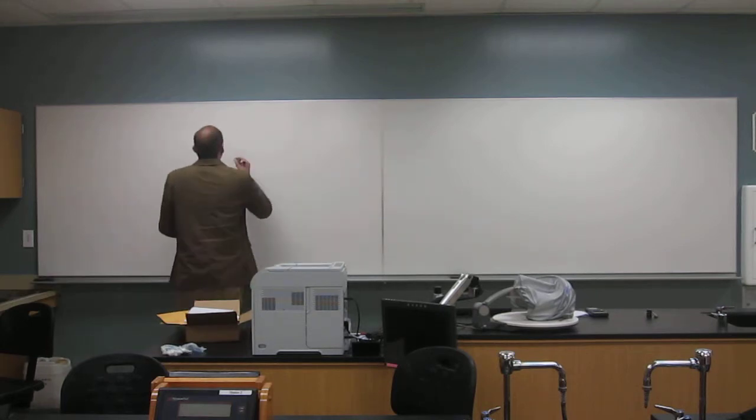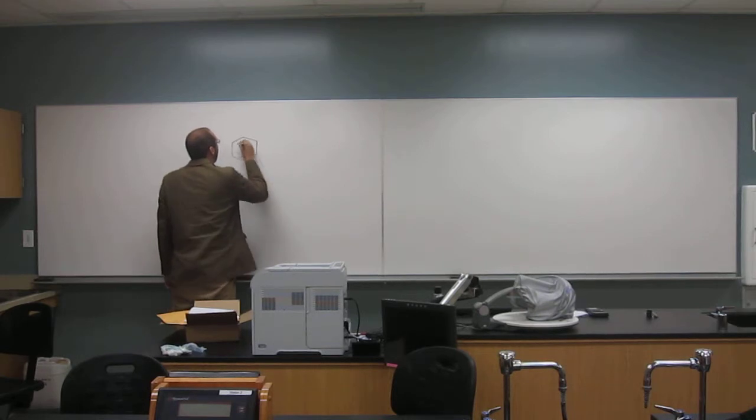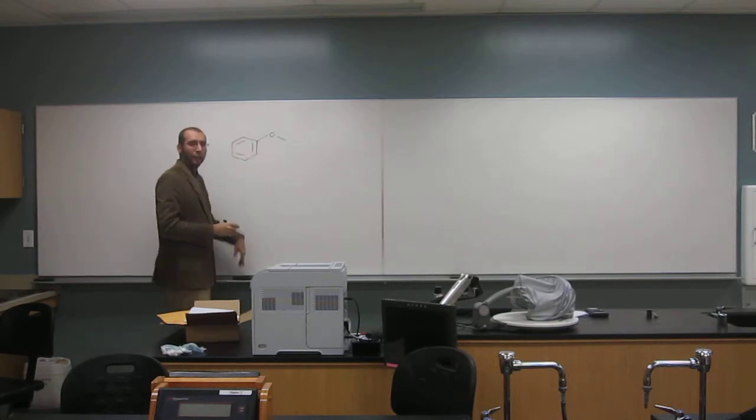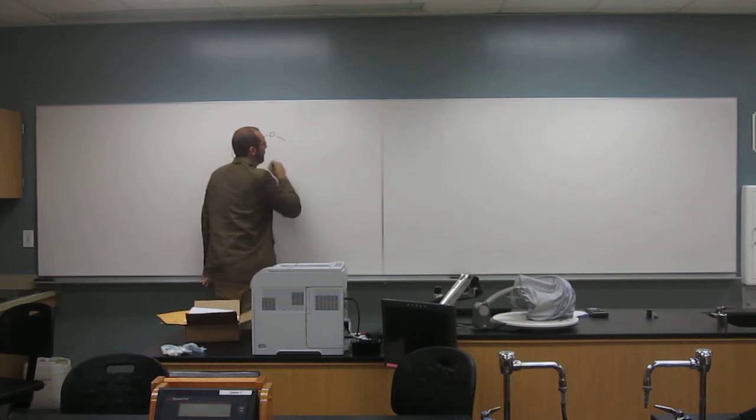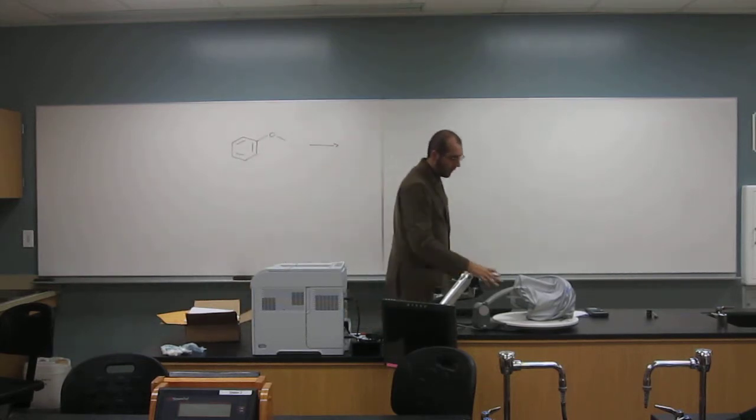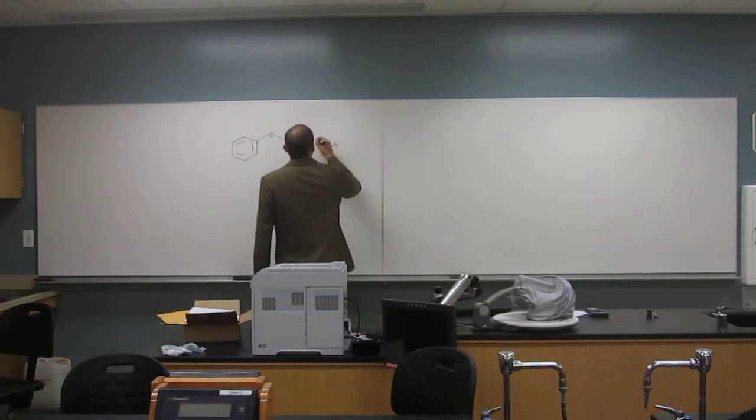And I know it has a little circle there, but I like to actually point out the double bonds in the benzene ring. And then, what does it say? It gives us a reagent, but it doesn't give us a product.